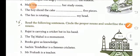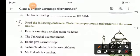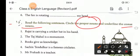Now, see the F1. In the F1, read the following sentence. Then, circle the proper noun and underline the common noun. Proper noun, we have to circle it. And, in the common noun, we will underline.